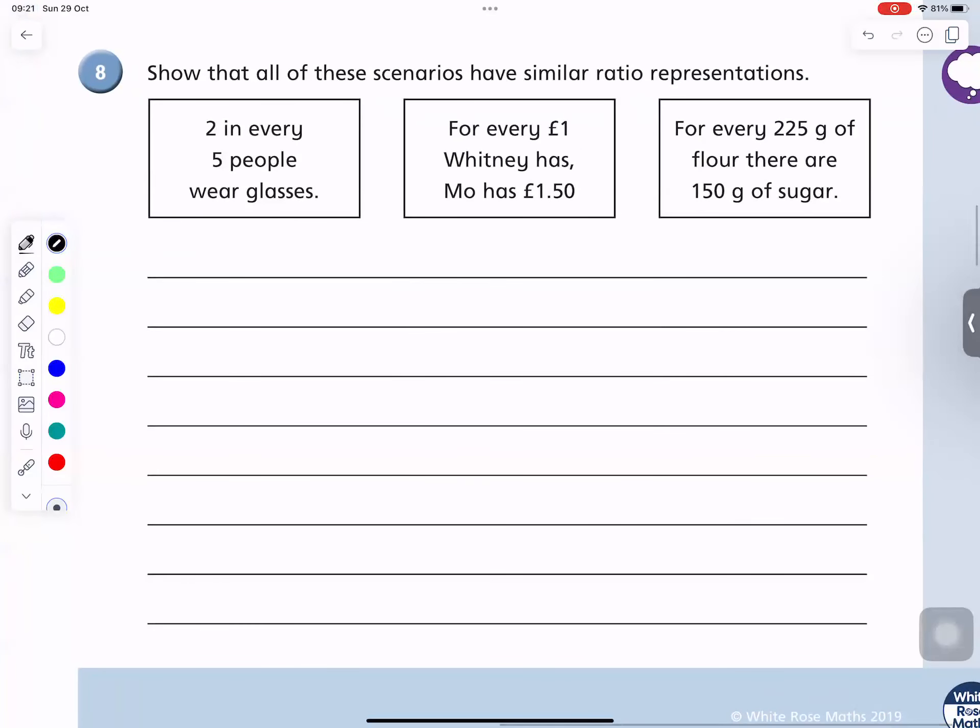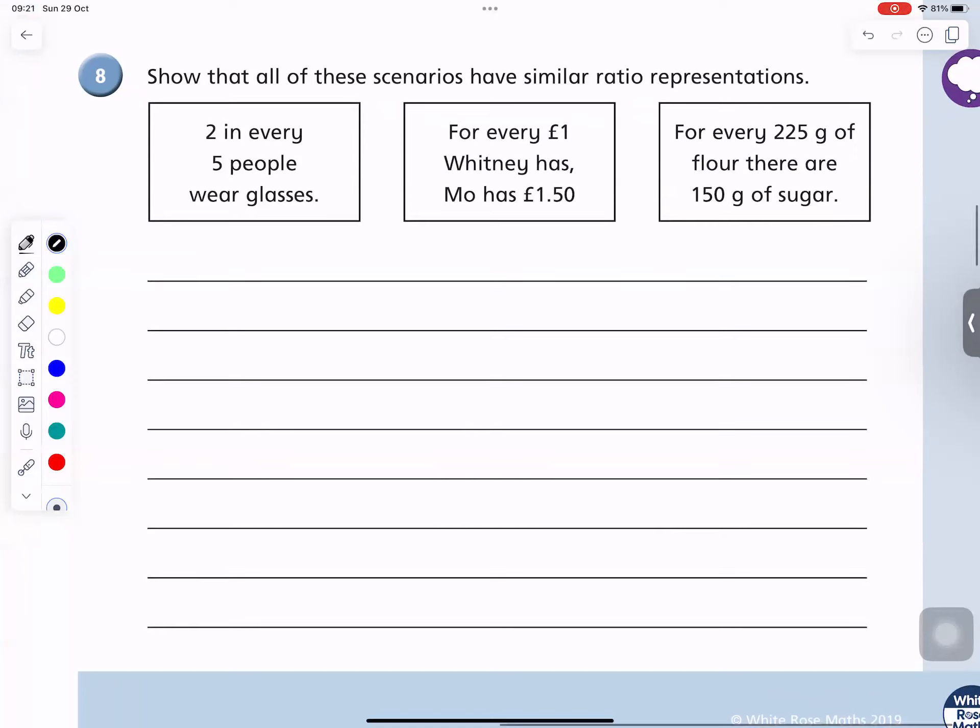Can you read that for me? Two in every five people wear glasses. For every one pound Whitney has, Mo has one pound fifty. For every two hundred and twenty-five grams of flour, there is one hundred and fifty grams of sugar. Excellent reading, Luca.